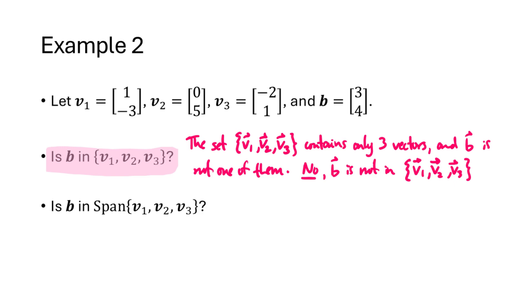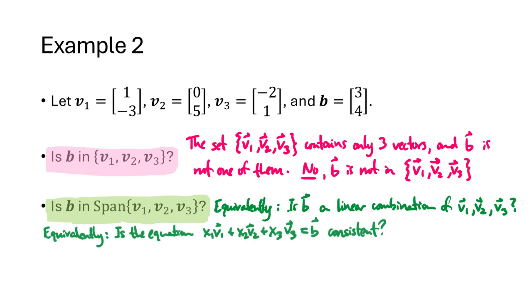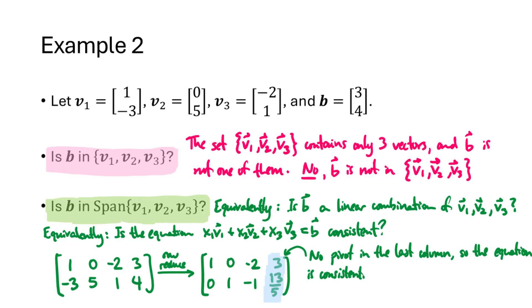How does the question change when we add the word span? Now we're asking whether b is a linear combination of v1, v2, and v3. From lecture 7, we rewrite this as whether the vector equation x1v1 + x2v2 + x3v3 = b is consistent. We set up and row reduce an augmented matrix, then check for a pivot in the last column. In this case, there's no pivot in the last column, so the equation is consistent — yes, b is in the span of {v1, v2, v3}.